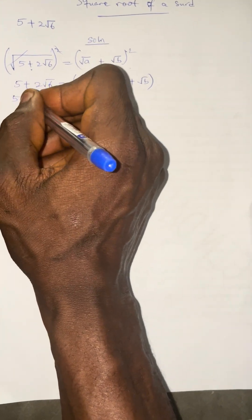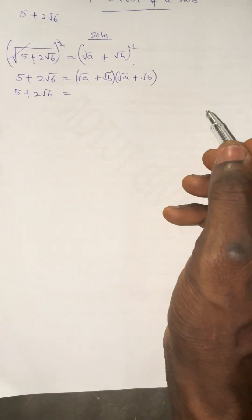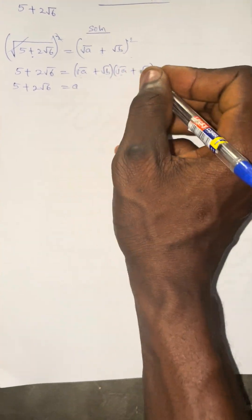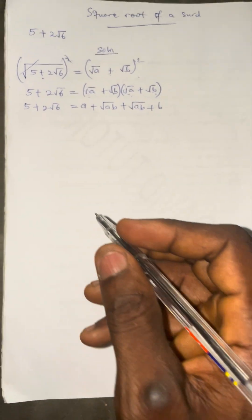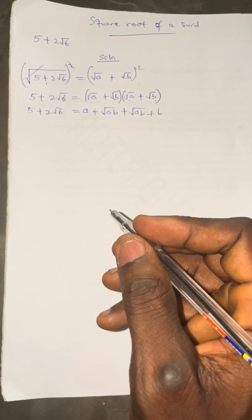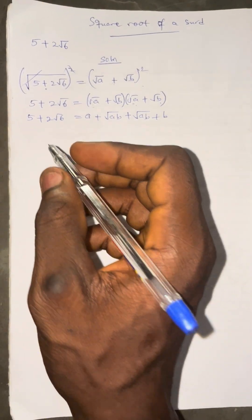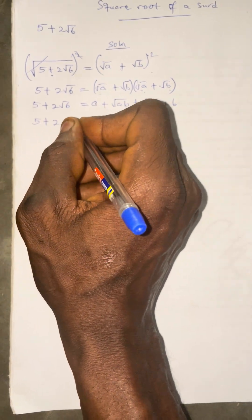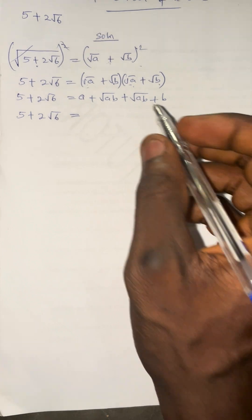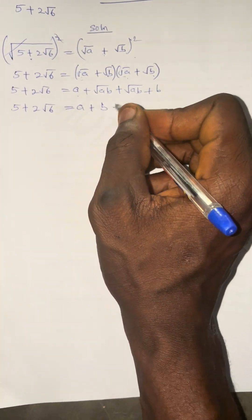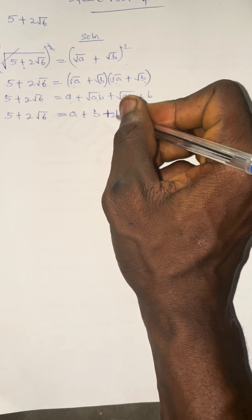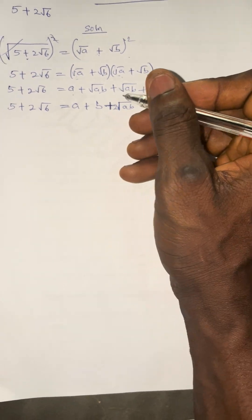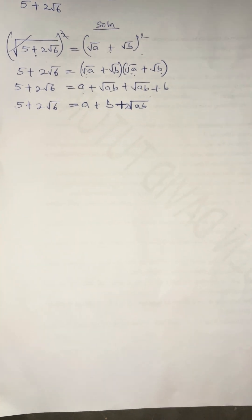We have 5 plus 2 root 6 equal to the expansion. Root A times root A gives A. Root A times root B gives root AB. Root B times root A gives root AB. Root B times root B gives B. So combining, we have 5 plus 2 root 6 equal to A plus B plus 2 root AB.